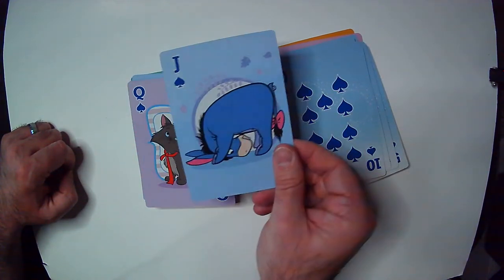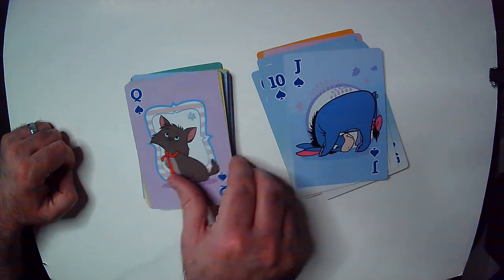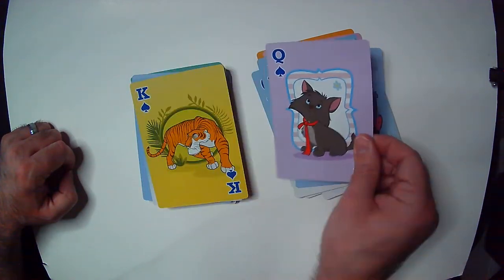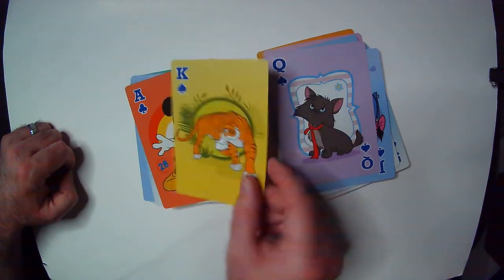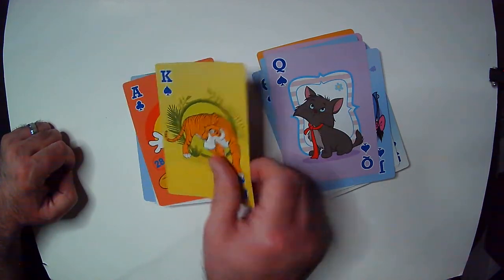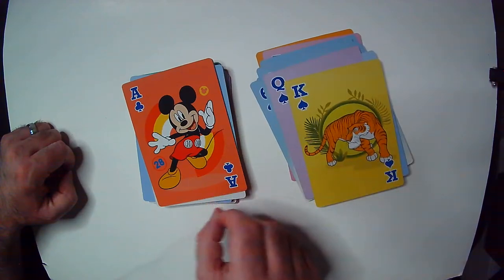So in here, Eeyore jack, I don't know who this is. Nice, Shere Khan, probably one of my favorite Disney characters is this guy.